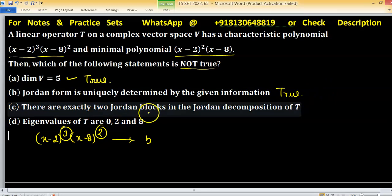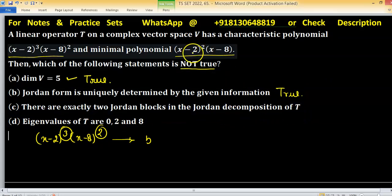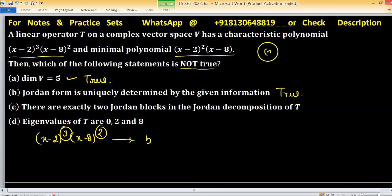Statement (c): There are exactly two Jordan blocks in the Jordan decomposition of T. There are only two eigenvalues, one corresponding to factor (x - 2) and the second to (x - 8). So in the Jordan representation there will be exactly two Jordan blocks. This statement is again true.